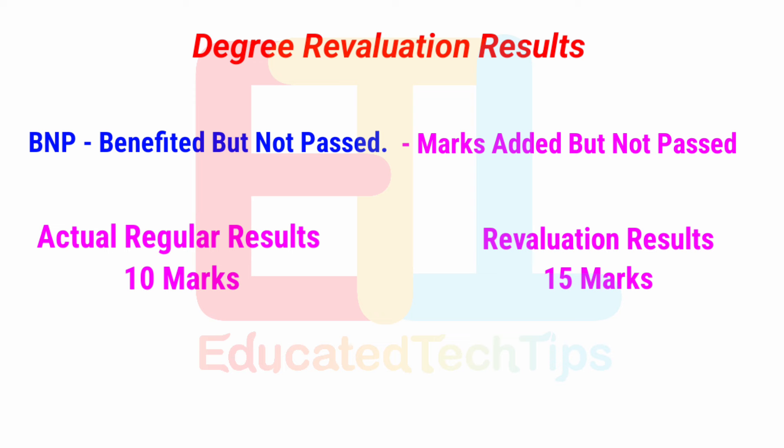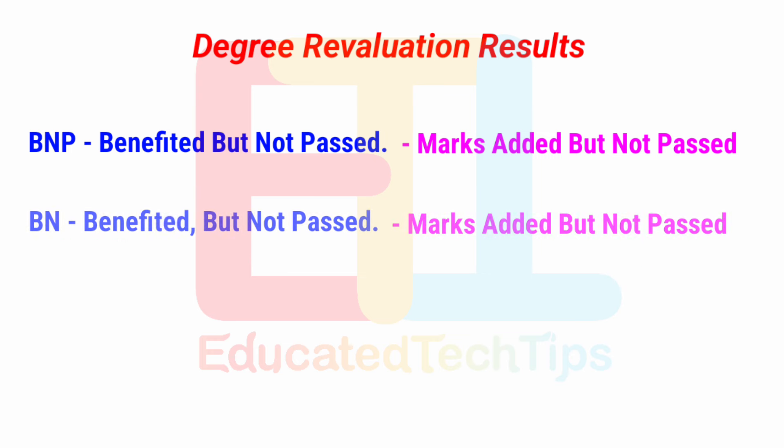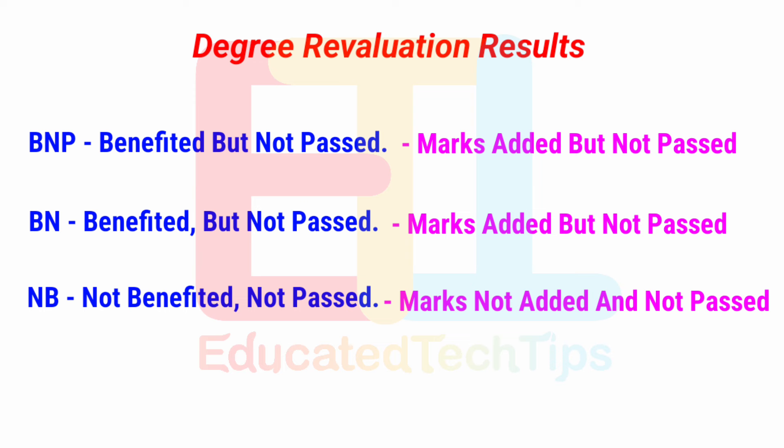The marks added may vary — it could be five marks or some other amount — depending on what subject-related content is in your answer booklet. Next, NB means 'Non-Benefit.' In this case, no marks were added in revaluation and you also did not pass. So in BNP, BN, and NB, all three mean you have not passed.